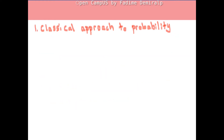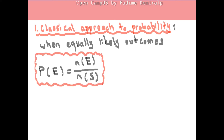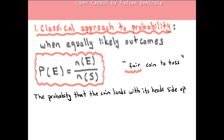We can start with the classical approach. When the outcomes in the sample space of a chance experiment are equally likely, the probability of an event E is the ratio of the number of outcomes in event E to the total number of outcomes in the sample space. We assume equally likely outcomes here, so we assume tossing a fair coin in our example. According to the classical approach, the probability that the coin lands with its head side facing up is the ratio of 1 to 2, or 50%.